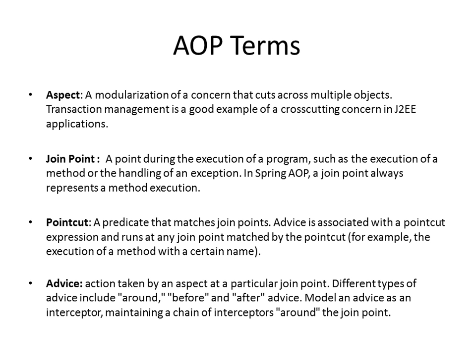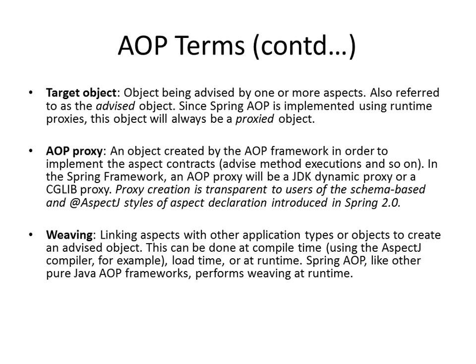You specify filters which will identify the methods for which the advice needs to be applied. There are different kinds of advice: before advice, after advice, around advice, and so on. The target object is the object being advised by one or more aspects, also called the advised object. A proxy object is created by the AOP framework to implement the aspect it is working on. These aspects are linked by a process called weaving, which happens either at compile time, load time, or runtime. Spring AOP generally does it at runtime.